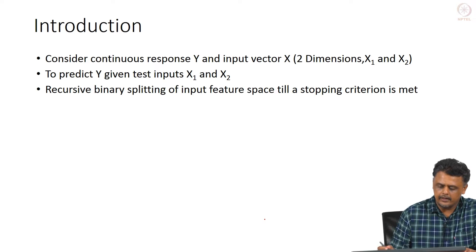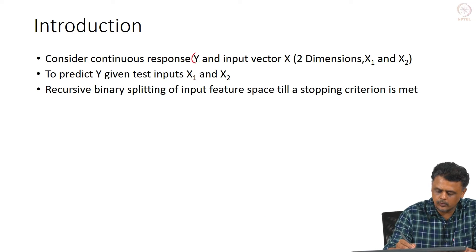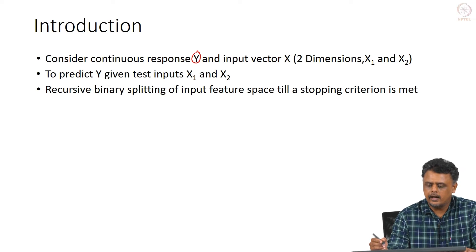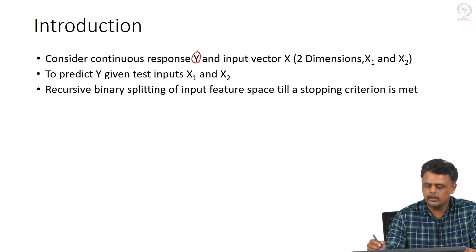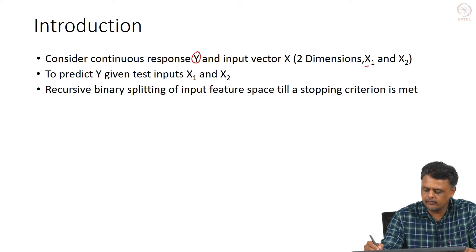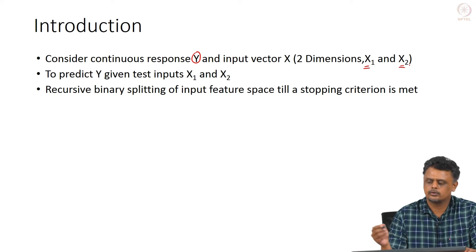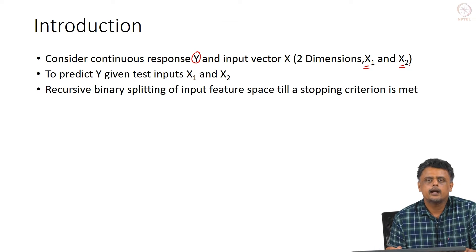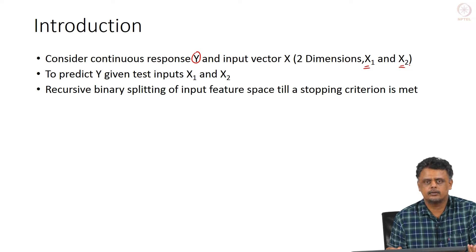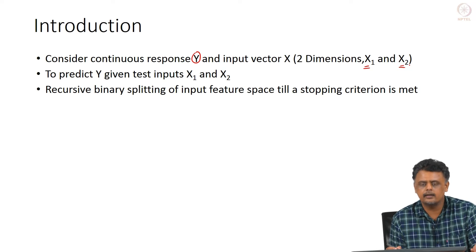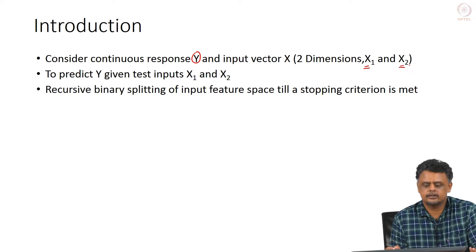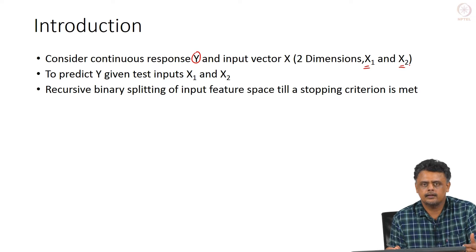Let us consider an example where we have a continuous response Y and an input vector X with two dimensions. We will refer to them as X1 and X2, and the task is to predict Y given test inputs X1 and X2. Assume that you are given training data, and we will see how recursive binary splitting of the input feature space gives you the desired results.